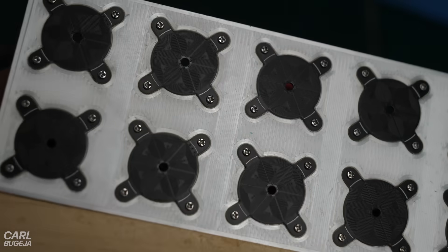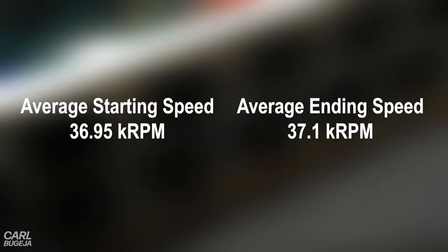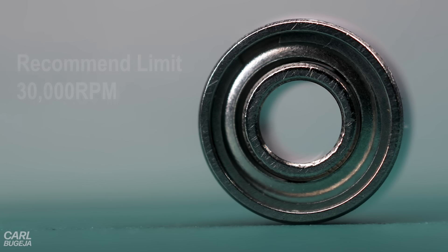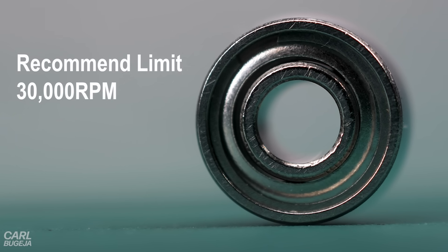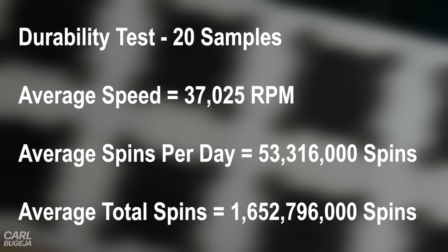None of the stators had any scratches. And the speed also remained constant during the test. On average each motor was spinning at 37,000 rpm. So we tested a bit higher than the 30,000 rpm limit. But this means that each motor made more than 1.6 billion spins.